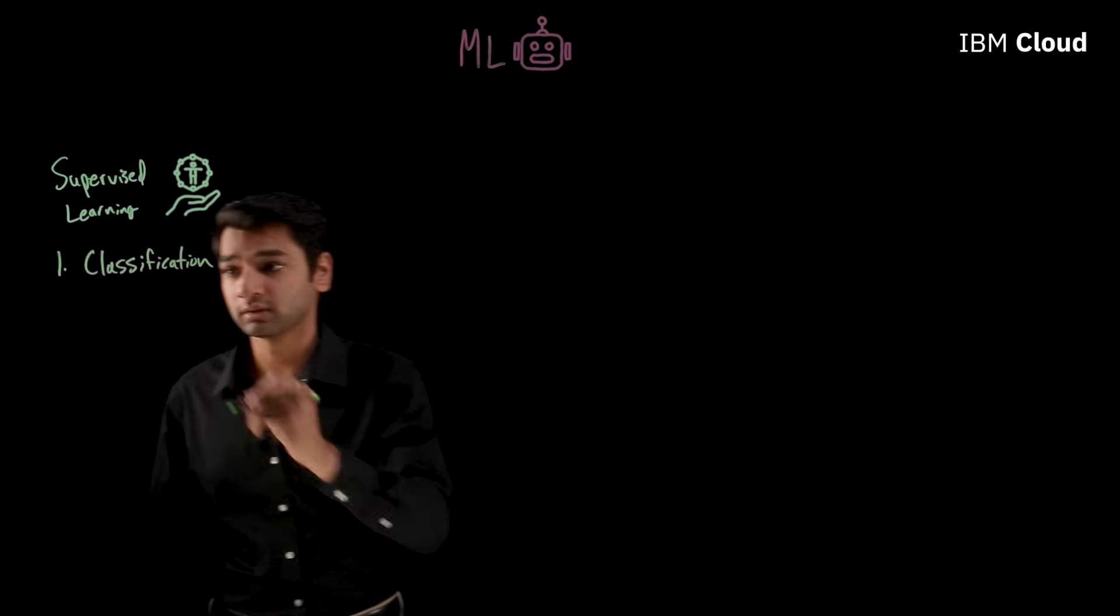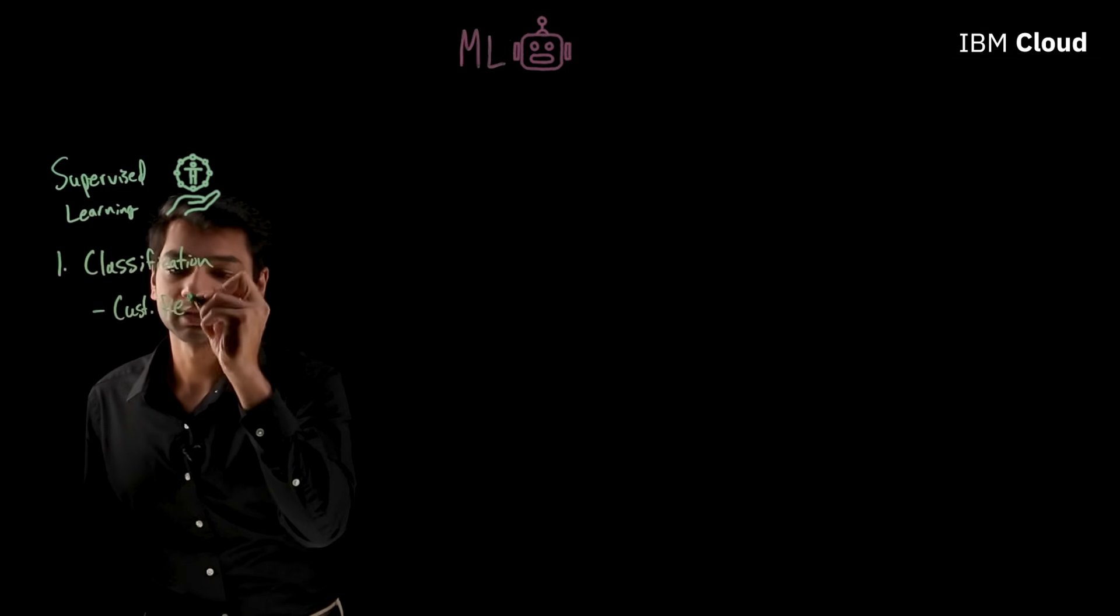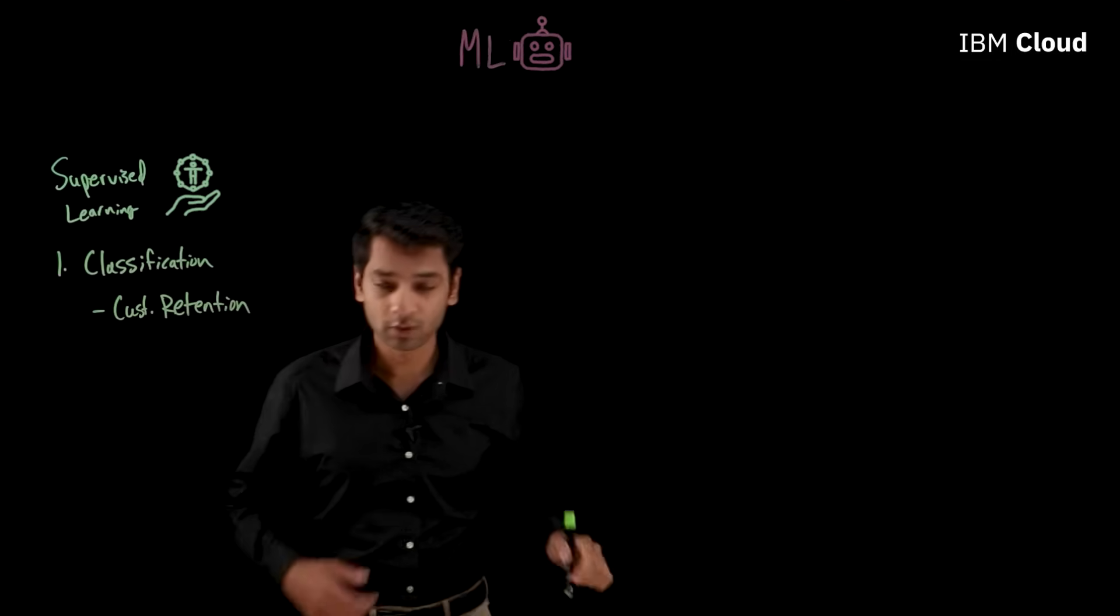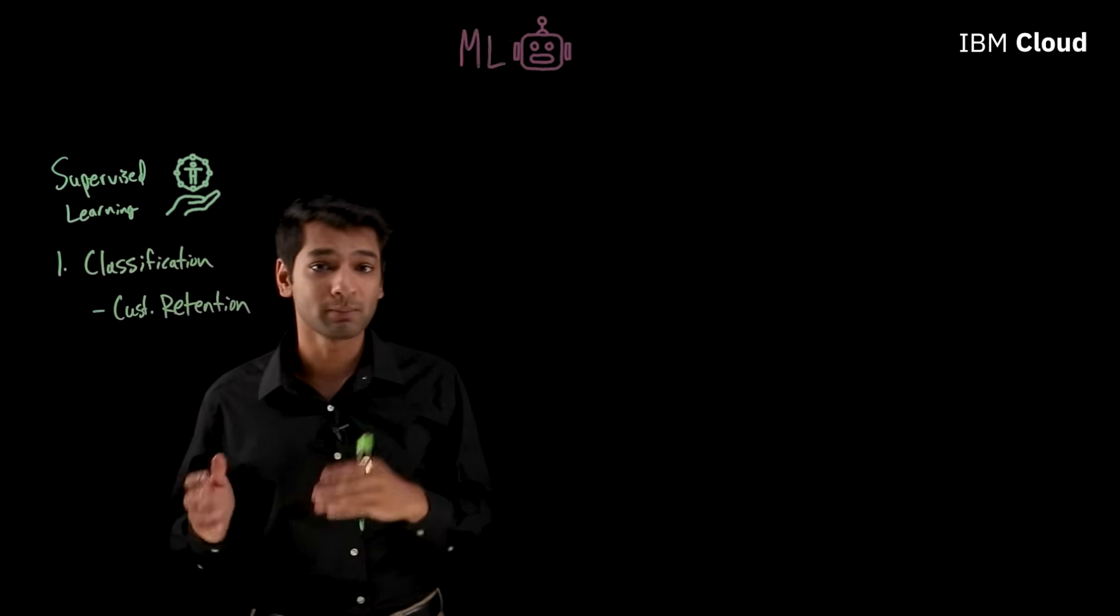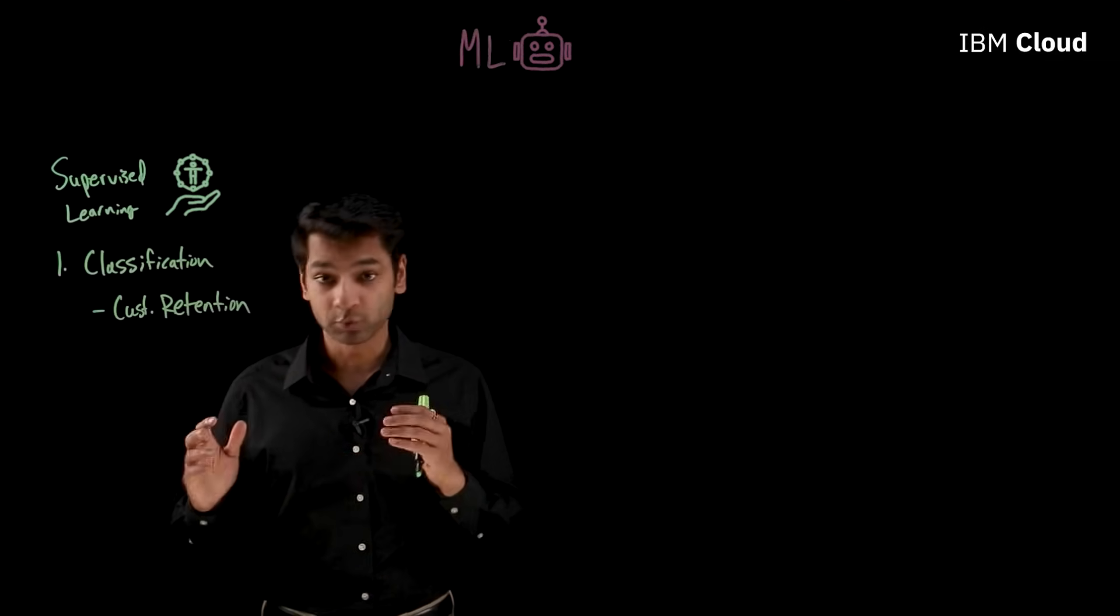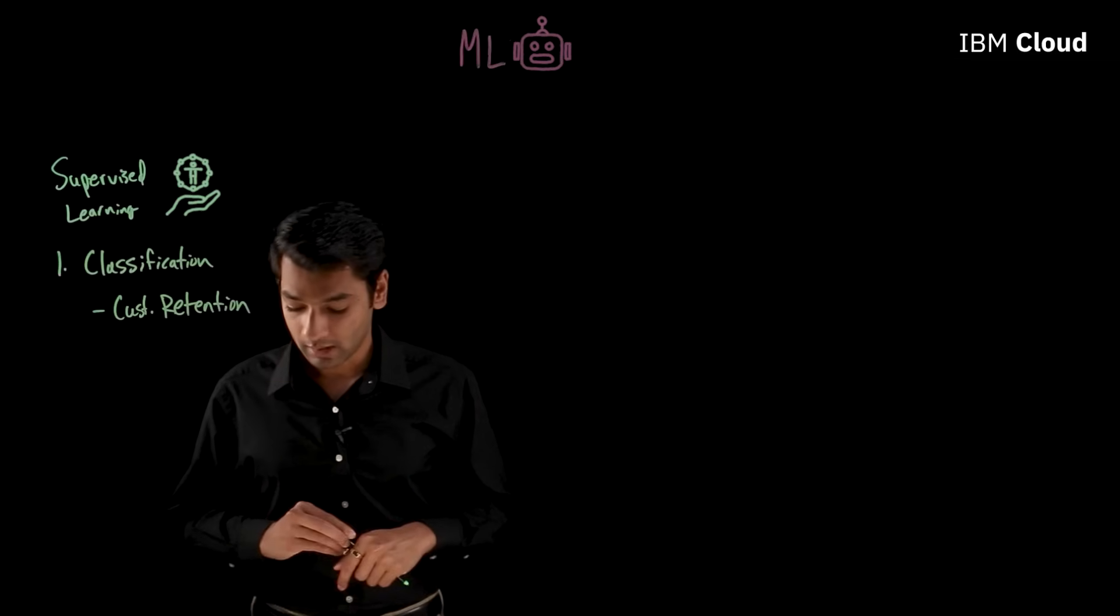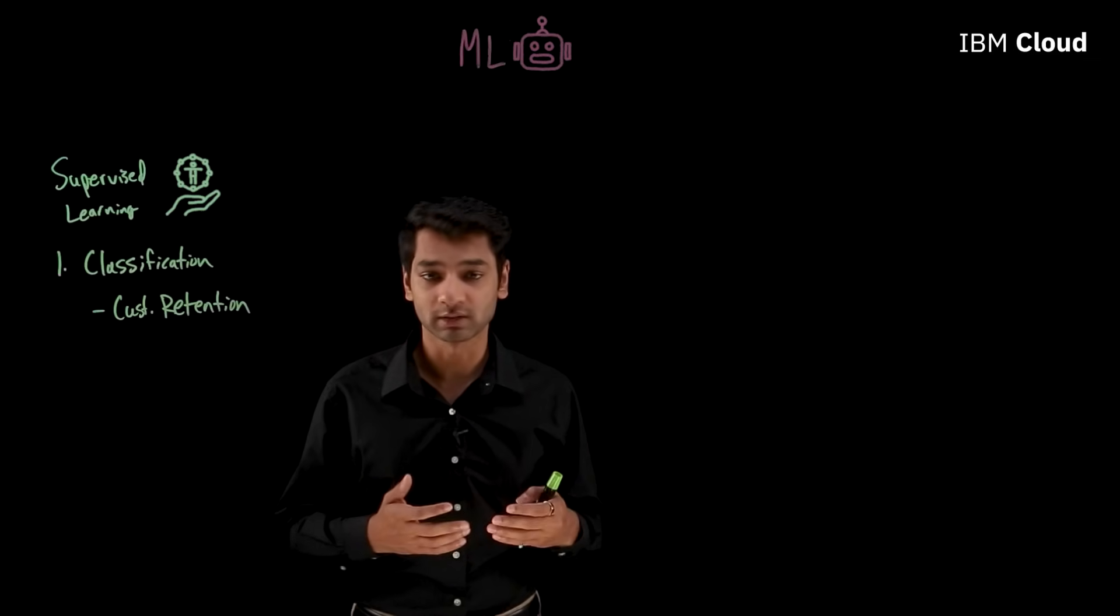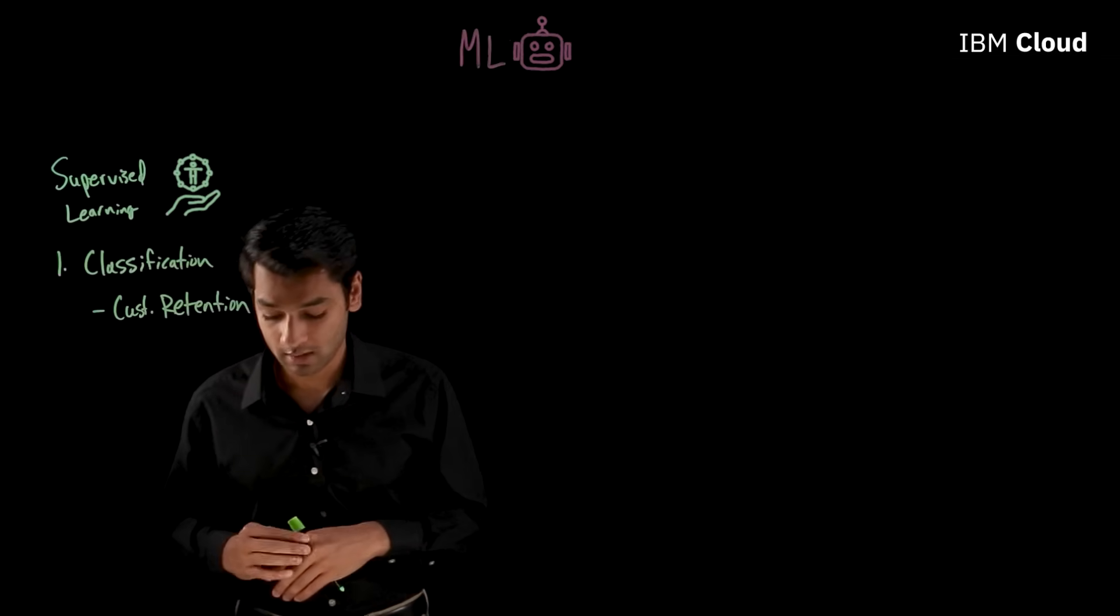An example of this in the real world is with customer retention. So if you're in the business of managing customers, one of your goals is typically minimizing and identifying customer churn, which are customers that no longer buy a particular product or service. And we want to avoid churn because it's almost always more costly to acquire a new customer than it is to retain an existing one.